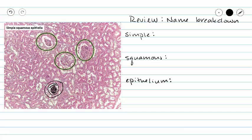I want to draw your attention to the name of this tissue: simple squamous epithelium. Let's do a quick review. What does the term 'simple' mean? If you are thinking there is only one layer of cells in a simple epithelium, you are correct. The other option is more than one layer of cells, which we call stratified epithelium. We're not going to worry about that in this video.